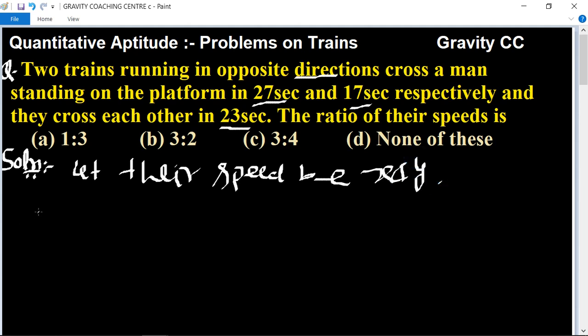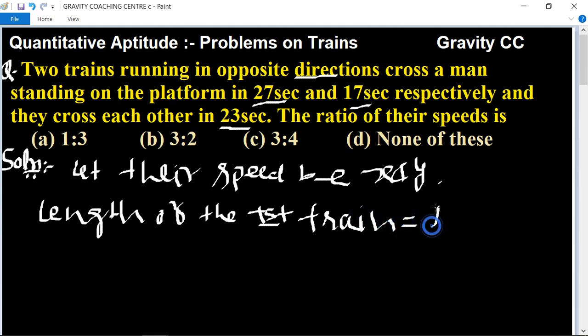So the length of the first train equals - the formula is speed into time. So speed is x and time is 27, so 27x.